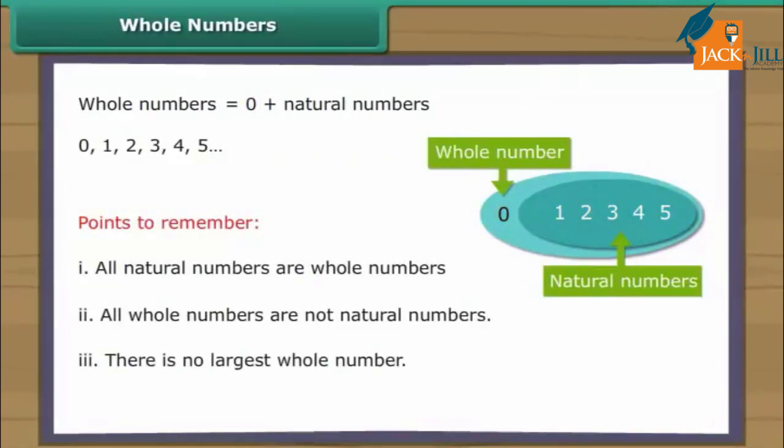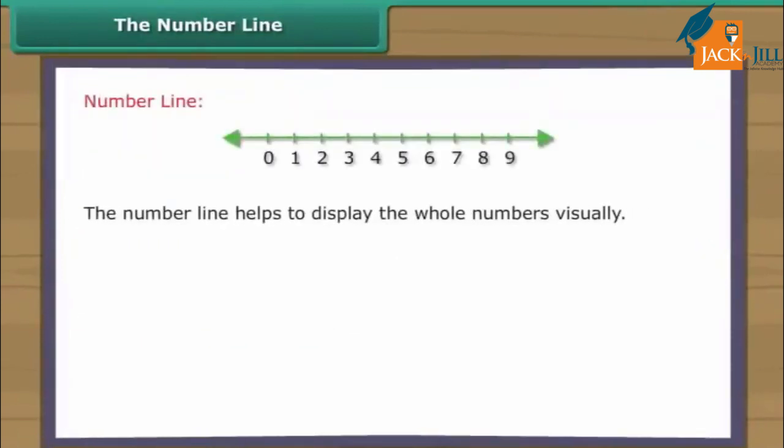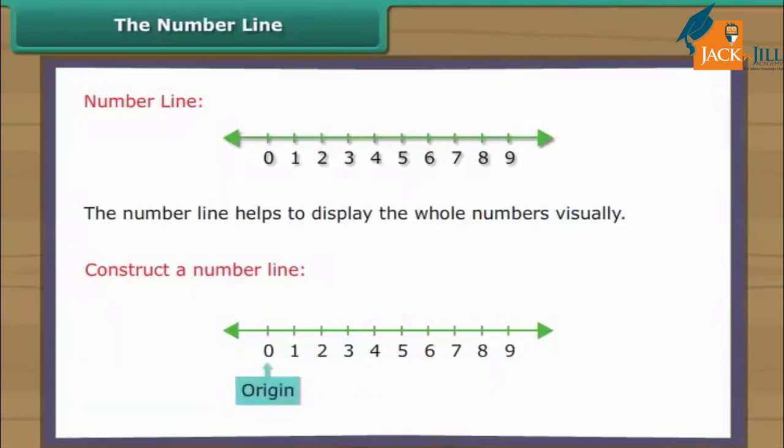The number line. The number line helps to display whole numbers visually. To construct a number line, we draw a straight line and choose any point and label it zero. This point is called the origin. We then choose some convenient length and moving to the right, mark off consecutive intervals along the line starting at zero.